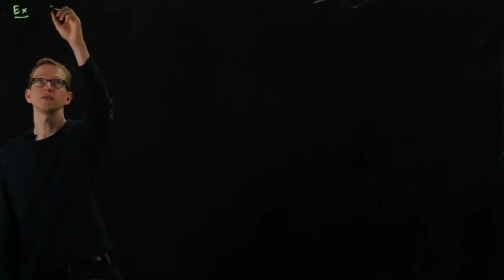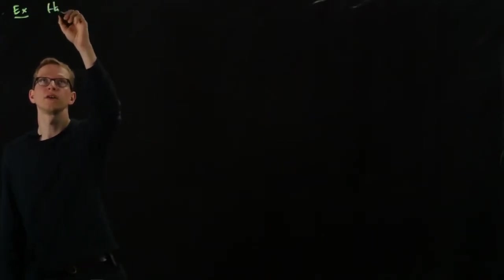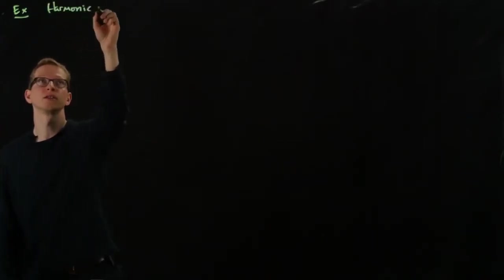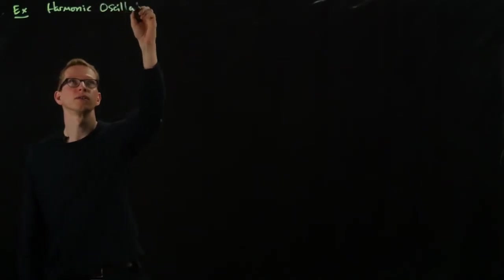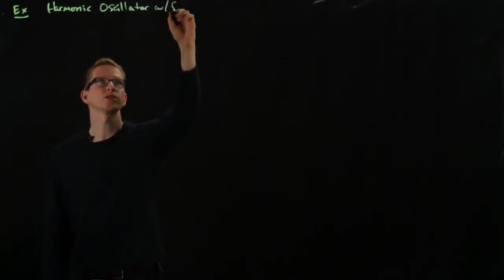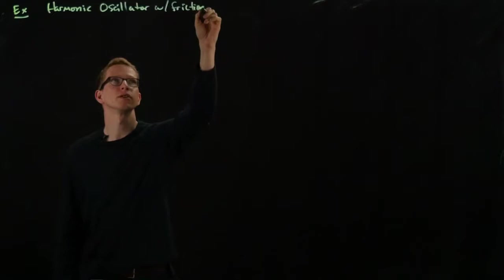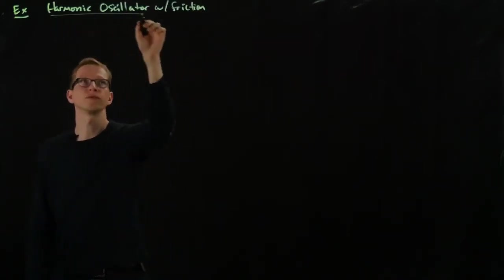So let's work through one example of a linear system. And this is the harmonic oscillator with friction. It's a model for the harmonic oscillator with friction.